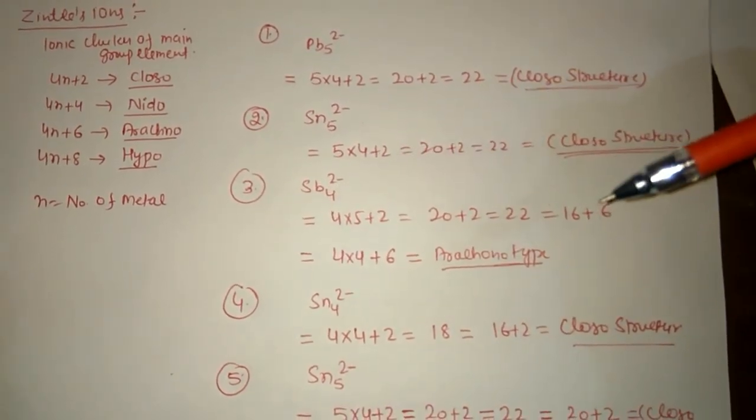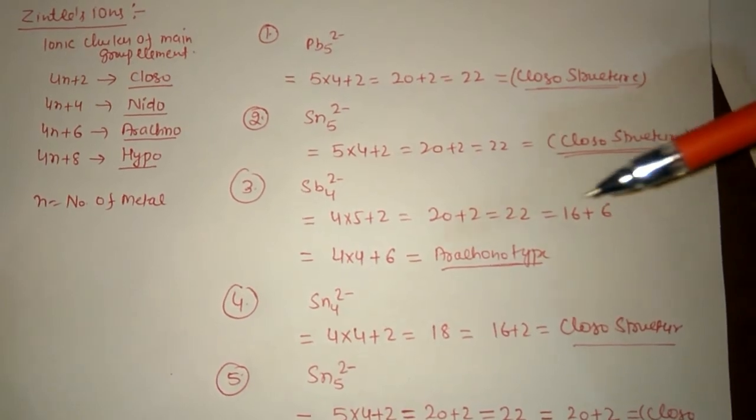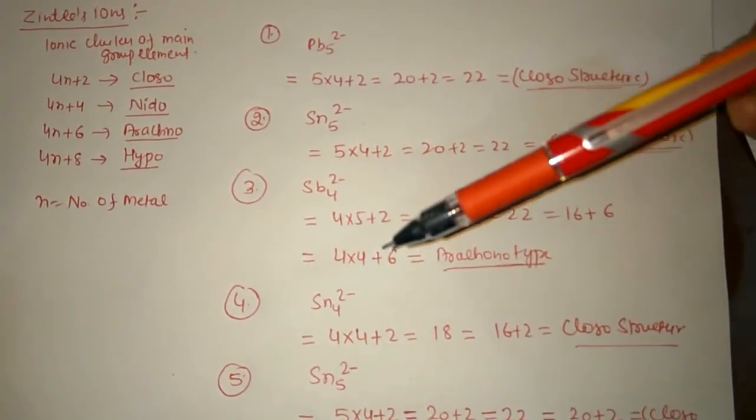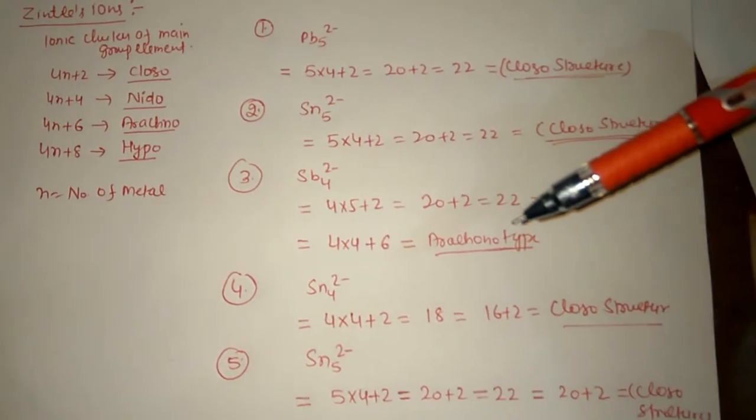4n, so 4×4 is equal to 16+6, that is equal to 22. Therefore, 4n+6, it is arachno type structure.